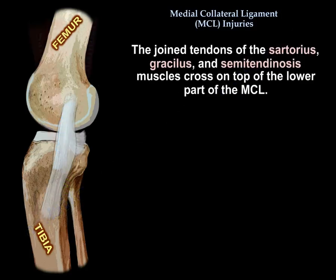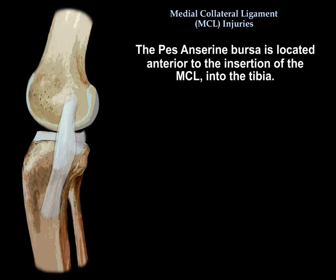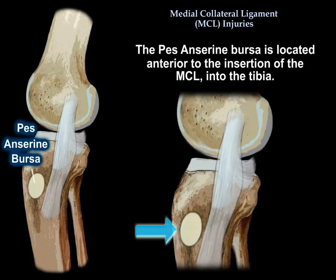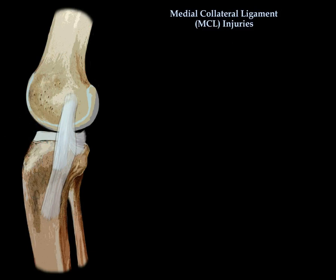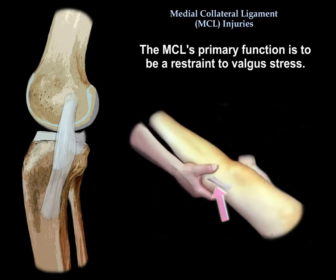The conjoined tendons of the sartorius, gracilis, and semitendinosus muscles cross on top of the lower part of the MCL. The pes anserinus bursa is located anterior to the insertion of the medial collateral ligament into the tibia. The MCL's primary function is to be a restraint to valgus stress.